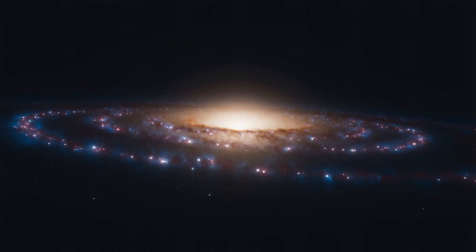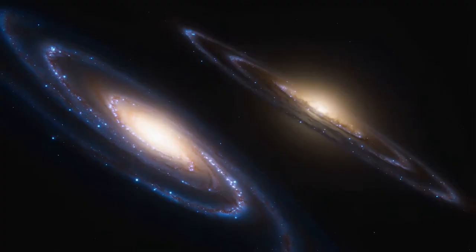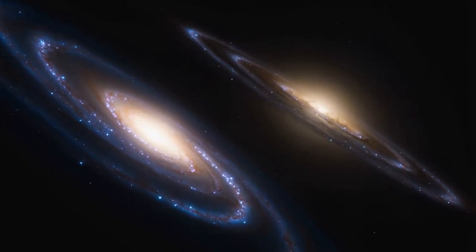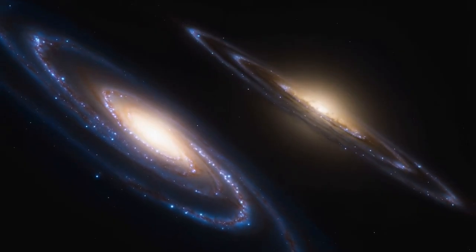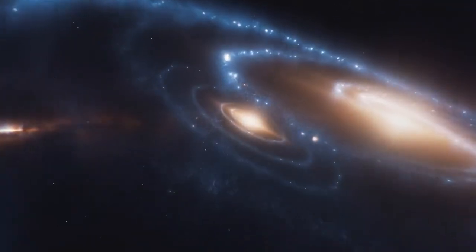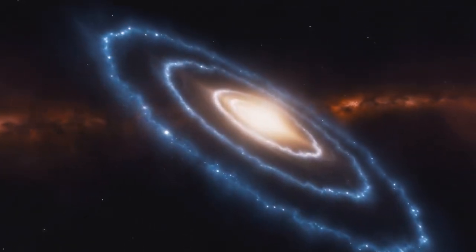J0107A has a well-defined spiral structure with a central bar similar to our Milky Way. However, it's over 10 times more massive and forms stars at 300 times the rate of our galaxy. Remarkably, J0107A shows an organized structure during a time when most galaxies were chaotic.